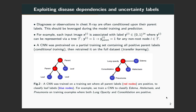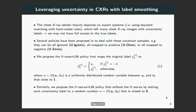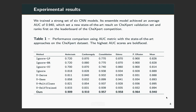The key to boosting model performance is to exploit the relation between disease labels and use a label smoothing technique to handle uncertainty examples. State-of-the-art results on both validation and test sets of the CheXpert dataset confirm the effectiveness of the proposed methods.